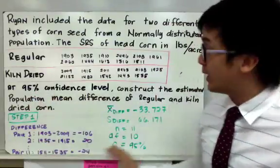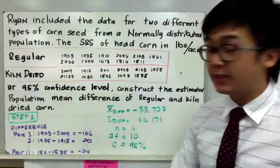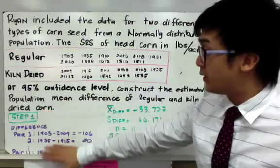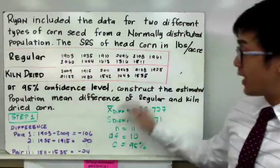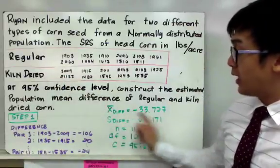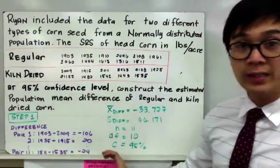So this is our first step in establishing our paired T design: finding the differences of sample one and sample two and finding its mean and standard deviation and all the other variables that we need in our formula.